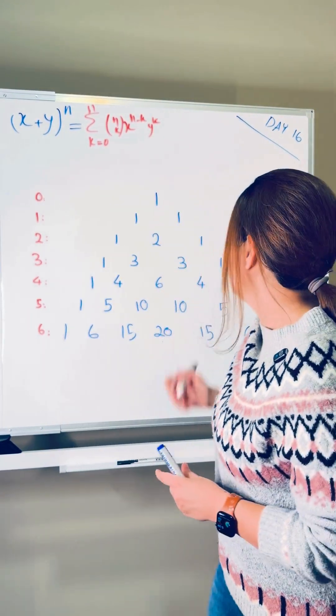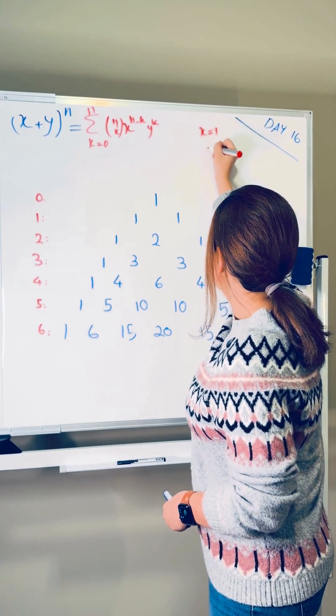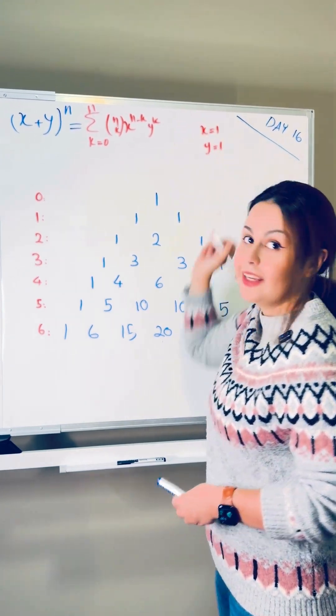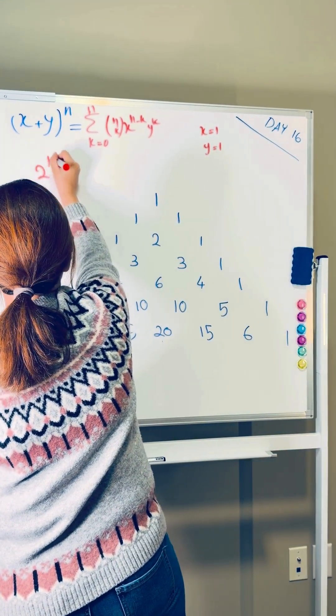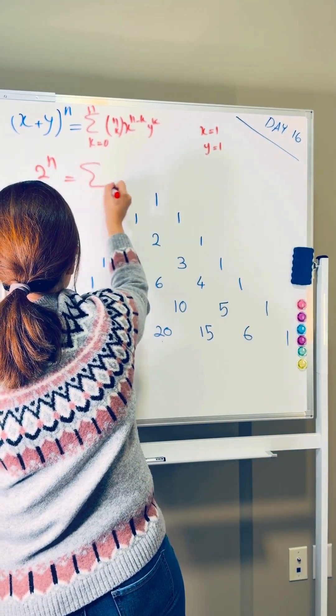What if x is equal to 1 and y is equal to 1? In that case, the left hand side is going to be 2 to the power of n, and the right hand side is going to be sigma of n choose k, k equal to 0 to n.